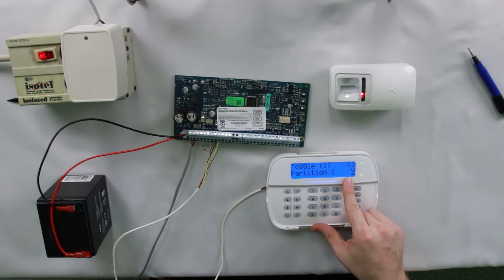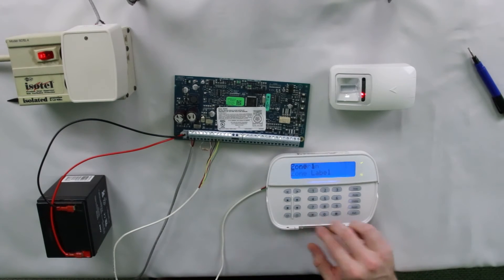It's going to ask you to select a partition. Nine times out of ten, every system is just on partition 1, so you can just hit pound. Hit pound. It's going to ask you to name the zone. Now if you have a zone label plugged in here, it will show up with whatever your zone label is. I'm not going to name it. It's just zone 1. That's good enough for me. So hit pound.